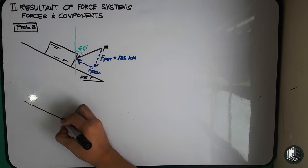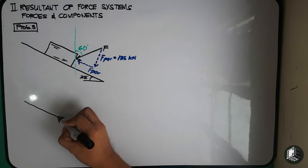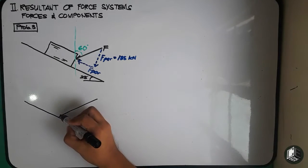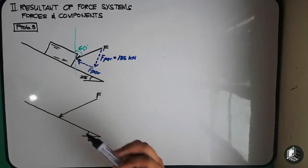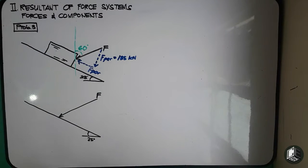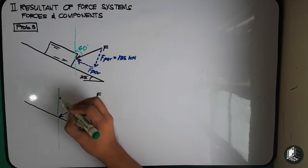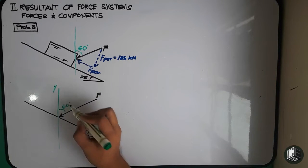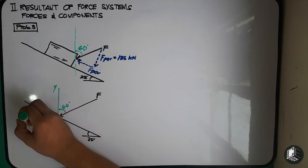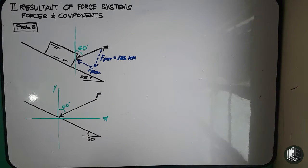This is our inclined plane, equal to 25 degrees. This is our force F. This is our y-axis, and the force F makes 60 degrees with respect to the y-axis. And this is our x-axis.